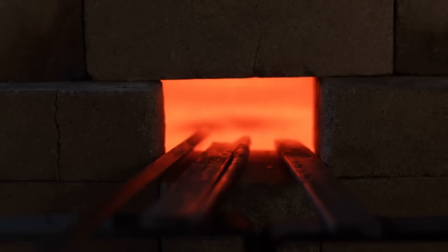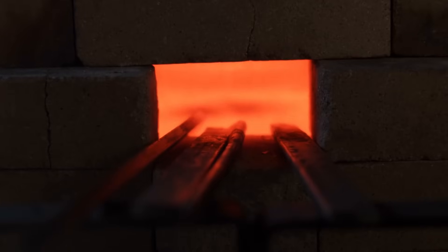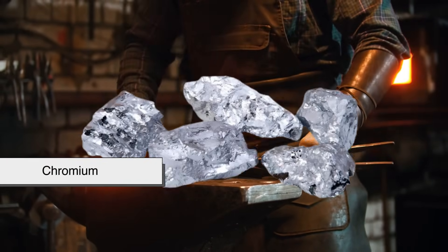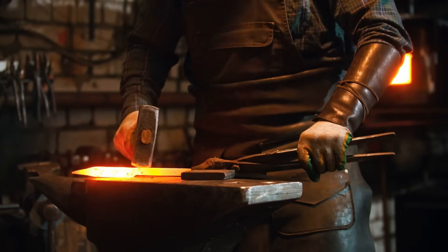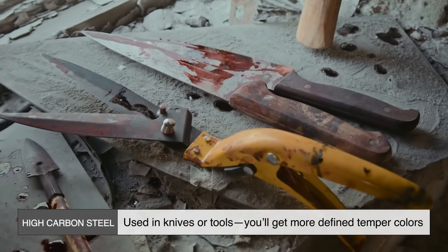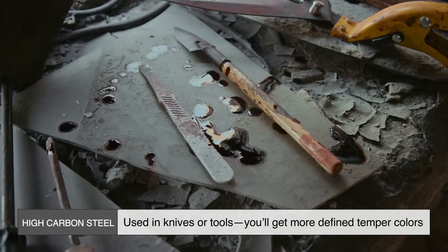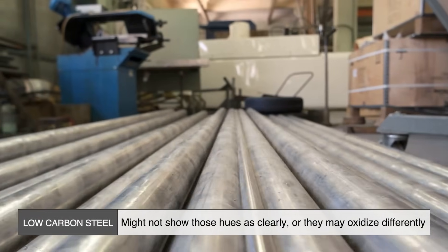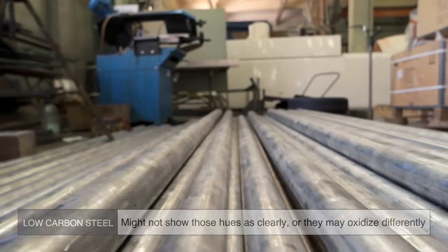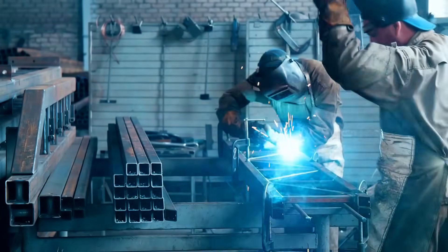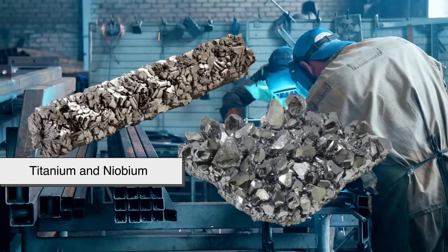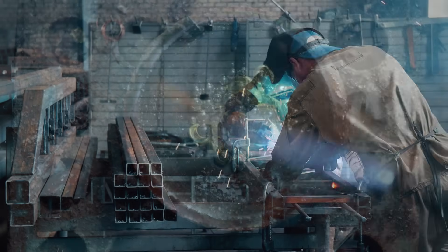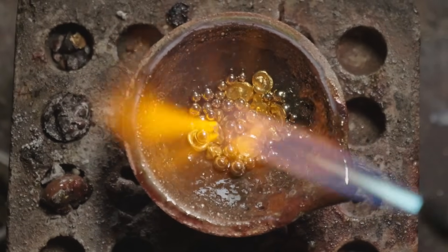Not all steel reacts the same way to heat. Different alloys behave differently. Some stainless steels, for example, contain chromium, which forms a different type of oxide layer when heated. That can change the colors you see or how they appear. In high carbon steels used in knives or tools, you'll get more defined temper colors, which is why bladesmiths love working with them. Meanwhile, low carbon steels might not show those hues as clearly, or they may oxidize differently. And it's not just steel—other metals like titanium and niobium also show striking color changes when heated due to similar oxidation and interference effects. Jewelers sometimes use this deliberately to create colorful metal art.